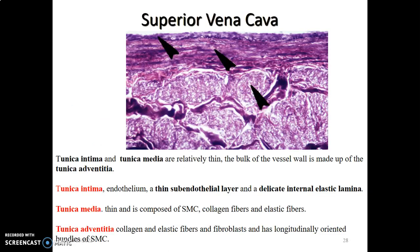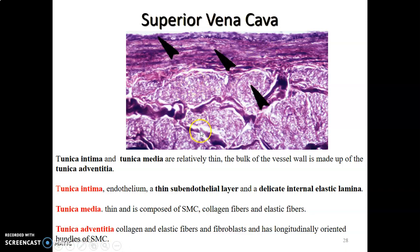For large veins, we have the superior vena cava. Like any blood vessel, there is a tunica intima, media, and adventitia, but in veins these layers are very thin. The superior vena cava has thin tunica intima and media, and the bulk of the vessel wall is the adventitia. The tunica intima has simple squamous endothelial lining with a thin subendothelial connective tissue layer and an internal elastic lamina. The tunica media is thin with smooth muscle cells, collagen fibers, and elastic fibers. The tunica adventitia is larger, containing collagen, elastic fibers, fibroblasts, neurovascular structures, and longitudinally oriented smooth muscle cells.